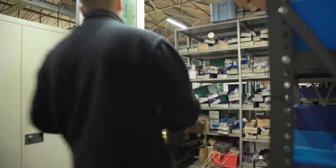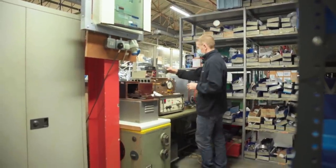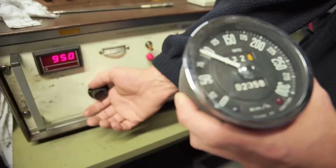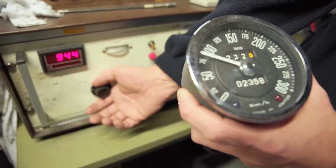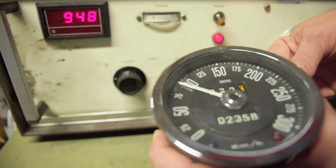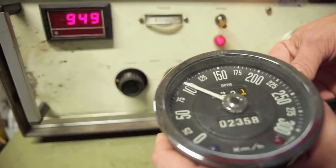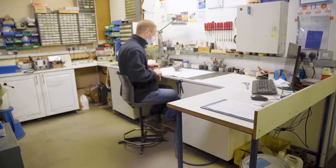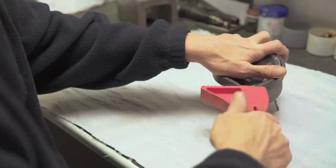The first thing we need to do is give the instrument a run-up on the machine. At the calibrated speed the instrument should show 60 kilometres per hour and this one certainly isn't. Now we've assessed the condition of the instrument it's time to start taking it apart and fixing these problems.